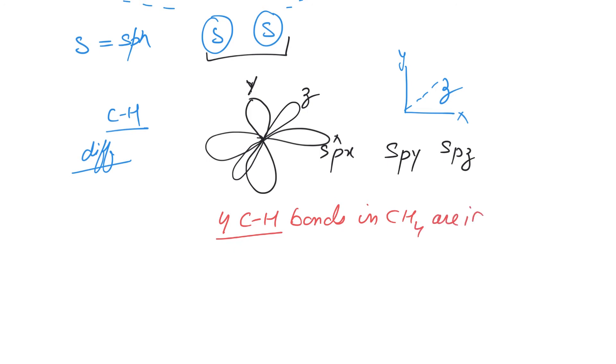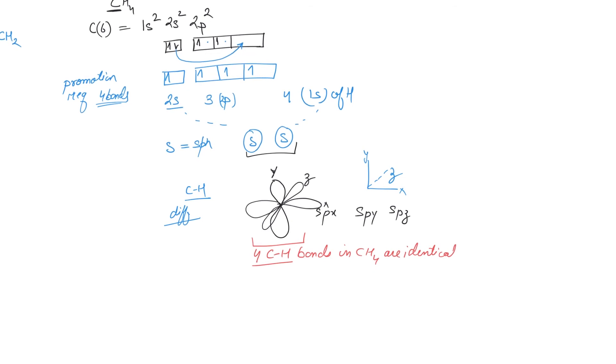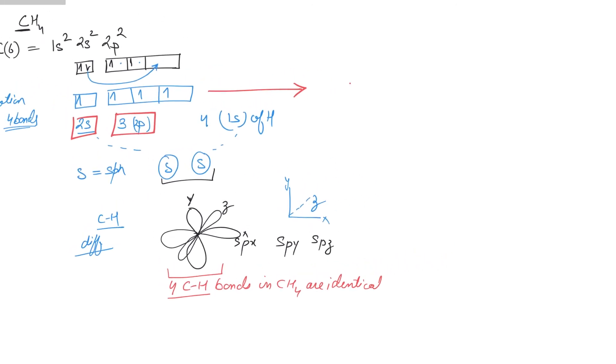We cannot explain the experiment by this approach. That means these s and p orbitals must undergo some change by which they become similar to each other. As it happens, they form something we call hybrid orbitals.